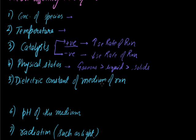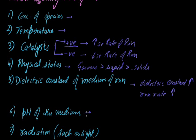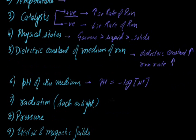Dielectric constant of the medium of reaction: in general, it is seen that more is the dielectric constant, more easily the reaction takes place. pH of the medium: pH is nothing but a measure of concentration of H+ species in the medium. Mathematically, pH equals minus log of concentration of H+ species. Radiation: there are certain reactions, such as the decomposition of AgBr or AgI, which take place only in the presence of light. The decomposition of AgBr is also used in black and white photography.